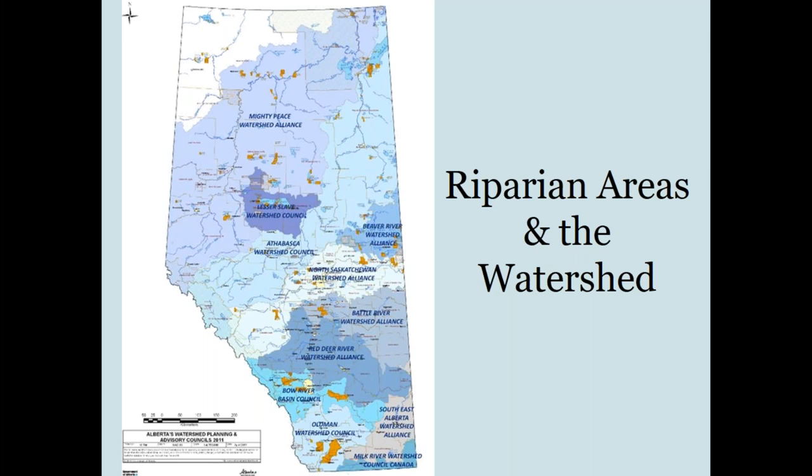There are also four additional sub-watersheds: the Bow, Old Man, and Red Deer Rivers, which flow into the South Saskatchewan, and the Battle River, which flows into the North Saskatchewan.